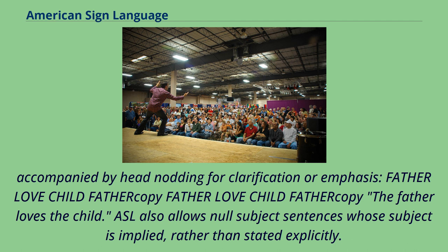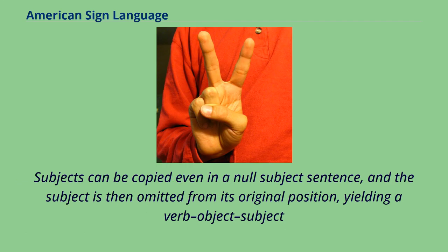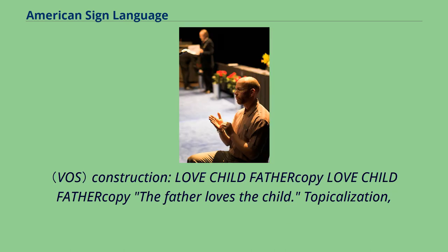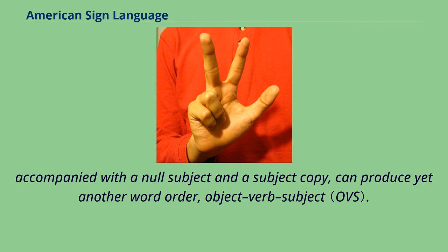ASL also allows null subject sentences whose subject is implied rather than stated explicitly. Subjects can be copied even in a null subject sentence, and the subject is then omitted from its original position, yielding a verb-object-subject construction. Topicalization, accompanied with a null subject and a subject copy, can produce yet another word order: object-verb-subject.